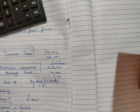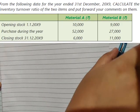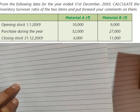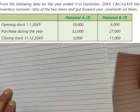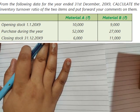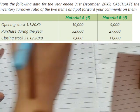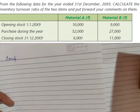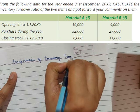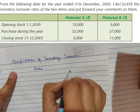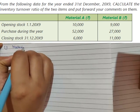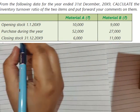Let us look at a question to understand this better. This question is from the ICAI study material. We have to calculate the inventory turnover ratio of two items. Opening stock, purchases during the period, and closing stock are given. For calculating inventory turnover ratio we require two things: first, the consumption during the period, and next, the average inventory. So let us compute the inventory turnover ratio for material A and material B. Material consumed is calculated by opening stock plus purchases minus closing stock.